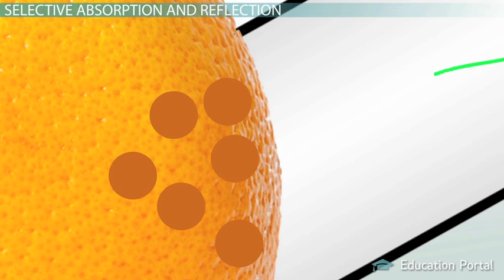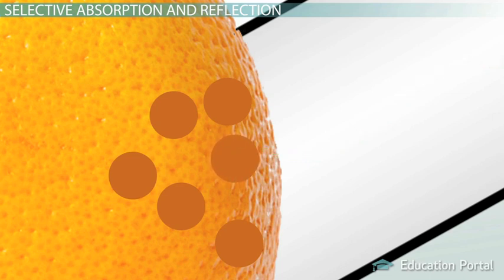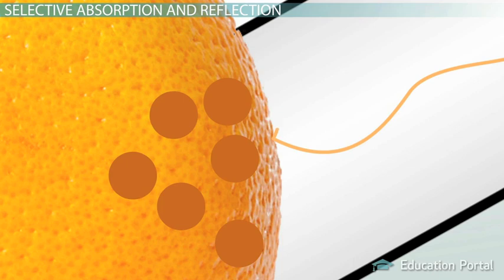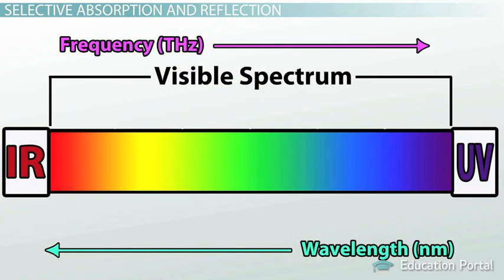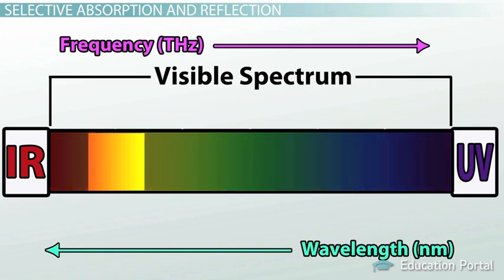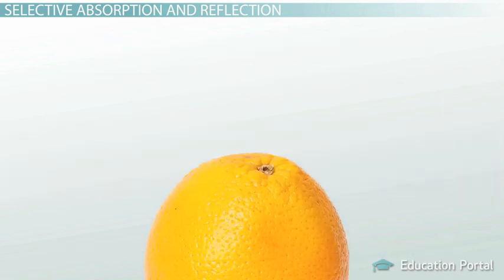What about green? When a green light wave strikes the orange, it also resonates with some of the molecules in the skin. It gets absorbed, and so we don't see green either. In fact, most of the frequencies inside the white sunbeam are absorbed by the orange. The only frequency that isn't absorbed is that of the color orange. Instead of being absorbed into the orange like the other colors, orange light is reflected by the skin of the fruit. In reality, there are a range of frequencies for the color orange — some waves are more reddish orange and some are more yellowish — but all those frequencies are reflected together, giving the orange the appearance of being orange.